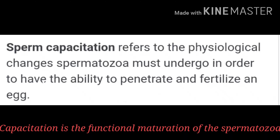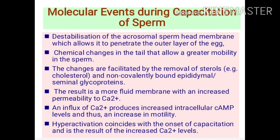Let us understand the major molecular events occurring during capacitation of sperm. The first is the destabilization or structural disintegration of the acrosomal sperm head membrane, which helps the sperm to penetrate the outer layer of the egg. The next is chemical changes in the tail region of the sperm, causing the sperm to become more activated with hyperactivated movement.